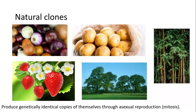Creating a clone is quite easy for these plants to do. They produce genetically identical copies of themselves through asexual reproduction using mitosis — basically cell division by mitosis. This is a really good synoptic link for examiners to ask you about, so make sure you're aware of mitosis.